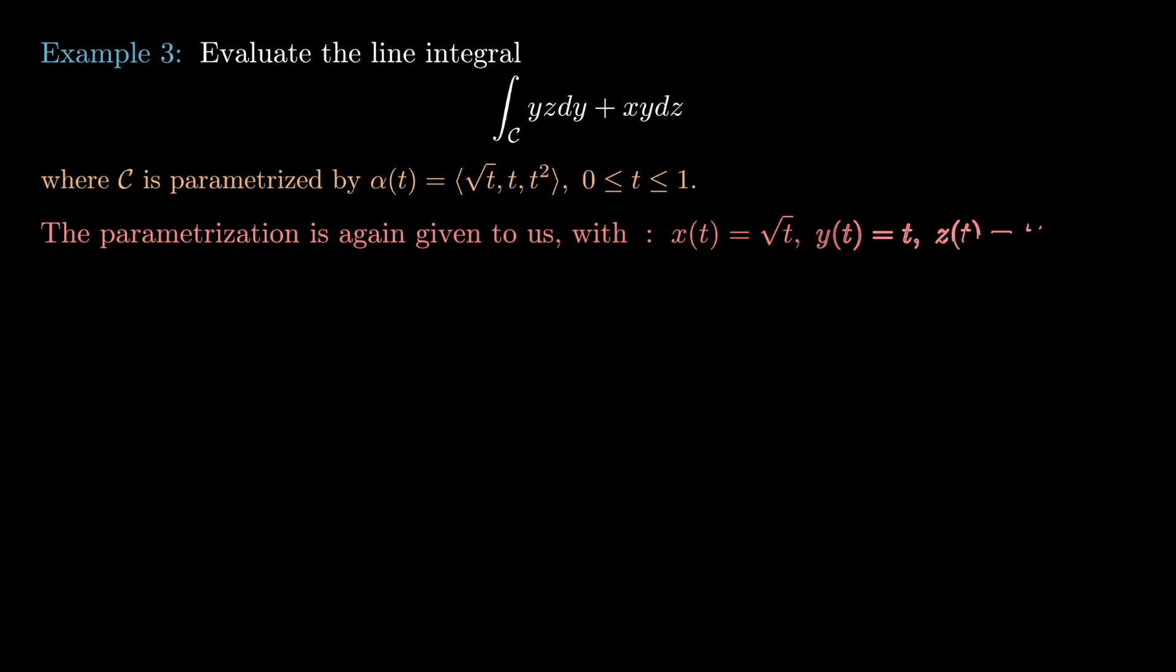So again life is easy. We've been given the parametrization: x is root t, y is t, and z is t squared.